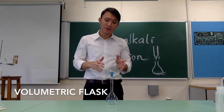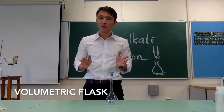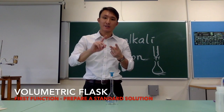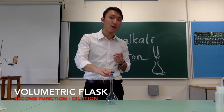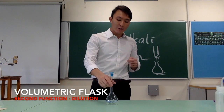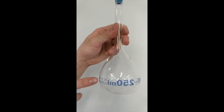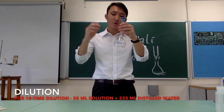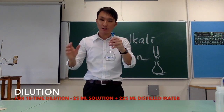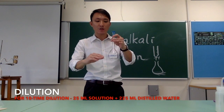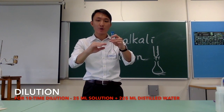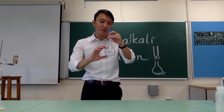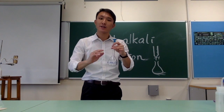The last apparatus is the volumetric flask. It has two functions: first, to prepare a standard solution; and second, for dilution. This one is 250 ml. For a 10-times dilution, we add 25 ml of the target solution into the volumetric flask, then top up with 225 ml of distilled water to make a total of 250 ml, achieving a 10-times dilution.